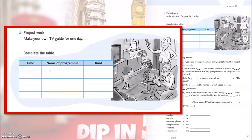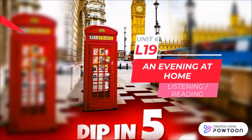Na primjer: Nine o'clock, Tom and Jerry, cartoon. Ili 7pm, dnevnik, the news. Svatko od nas imao je drugačiji TV raspored. Nakon što smo provjerili domaću zadaću i prisjetili se kako smo ju trebali napisati, možemo krenuti na naš današnji nastavni sat.